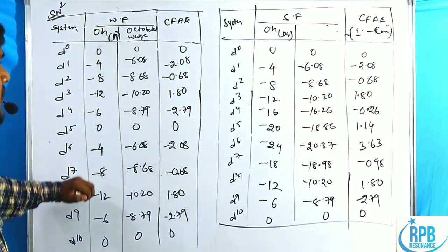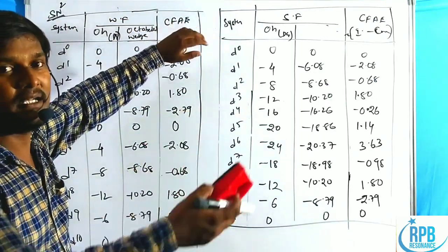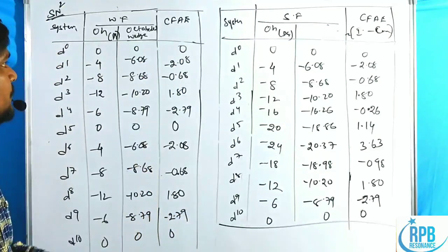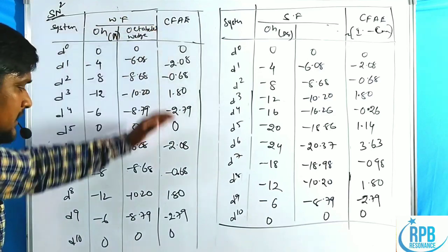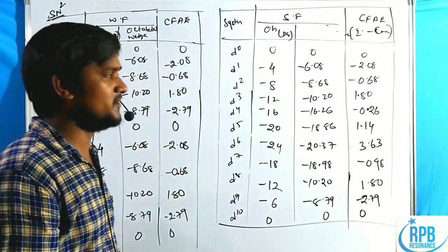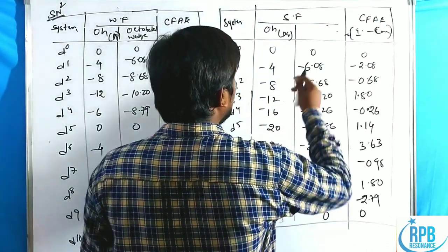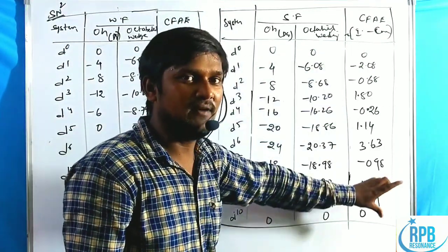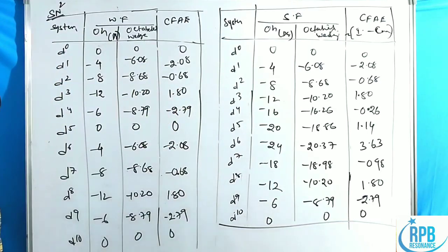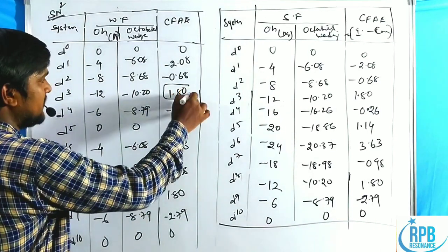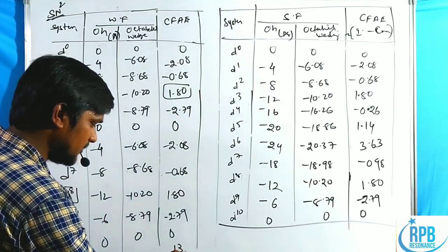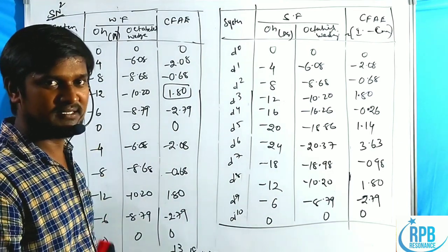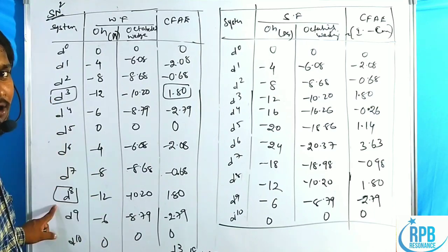Now let us go through the SN2 mechanism. In SN2, we take the octahedral wedge complex rather than pentagonal bipyramidal — the reason will be discussed in stereochemistry. The CFAE value is again: intermediate minus octahedral complex. In weak field with SN2, D3 and D8 configurations are positive, so D3 and D8 are inert. Please note: in the previous weak field SN1 case also, D3 and D8 were inert — I made a mistake there, please correct that.